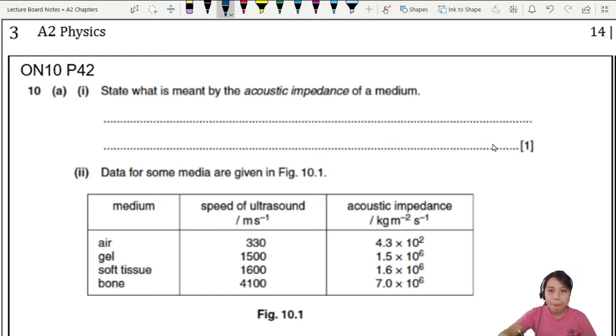State what is meant by acoustic impedance of a medium. This is our Z and you gotta remember Z is density of a medium times the speed of that wave. So we're going to use that as our definition.